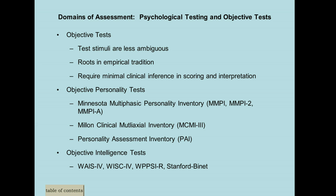With the MMPI, you have to be careful — there are some groups that tend to be really pathologized. Those groups include people who are educated, African-American, Hispanic, and women. When interpreting scores from people in these groups, you have to be careful, compare scores with other tests, and make sure what you're seeing is not a weakness of the MMPI. Also, the MMPI is not correlated with the DSM, so you can't make any diagnosis based on MMPI scores.